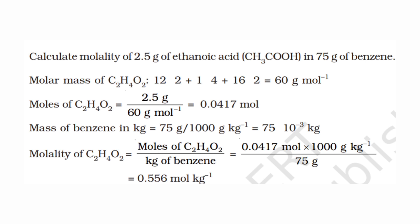Calculate the molality of 2.5 g of ethanoic acid in 75 g of benzene. Molality is moles of solute divided by mass of solvent in kilograms. The solute is ethanoic acid and the solvent is benzene. Mass of solvent = 75 g = 75/1000 kg = 0.075 kg. We then divide moles of ethanoic acid by 0.075 to get molality. We will practice these methods.